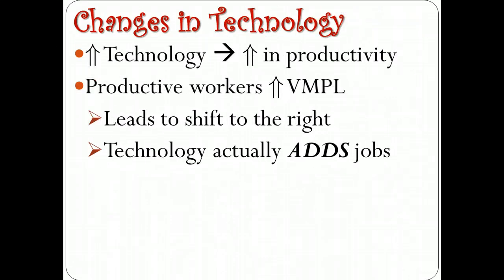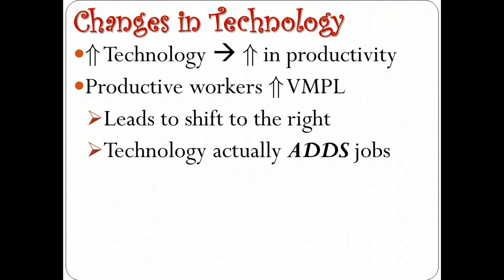The last shifter is changes in technology. Generally, when technology improves, productivity increases. If productivity increases, the value of the marginal product of labor increases at every given wage rate and level of output, producing a rightward shift in the demand for labor. So improvements in technology add to the demand for jobs in general and ultimately increase overall employment. We'll take more practice on working through the value of the marginal product of labor and identifying the appropriate amount of labor to purchase when we're in class. Thanks for listening.